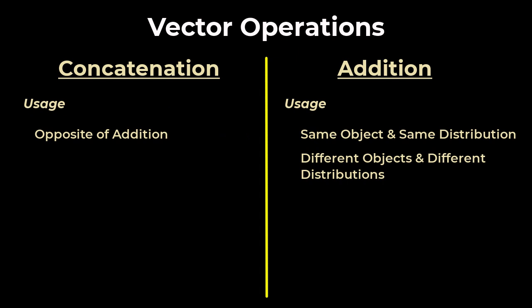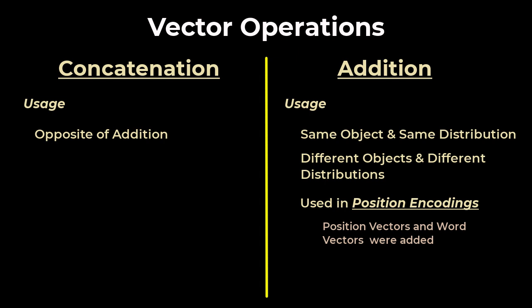In positional embeddings, we added. Positional vectors and word vectors represented different objects and were from different distributions. So it made sense to add vectors. But the case is different for self-attention. We generated eight word vectors that represent the same object and were from the same distribution. So according to the rules, I could add them. However, we choose to concatenate them.